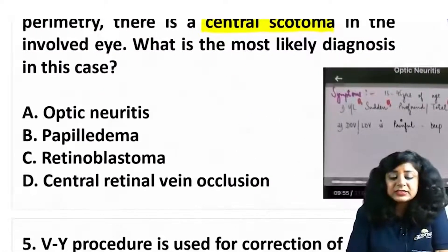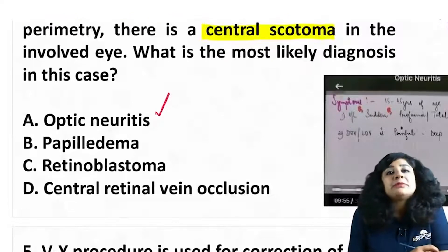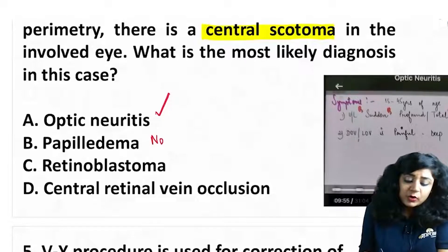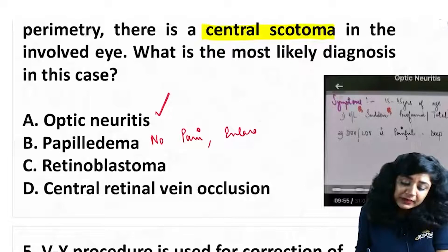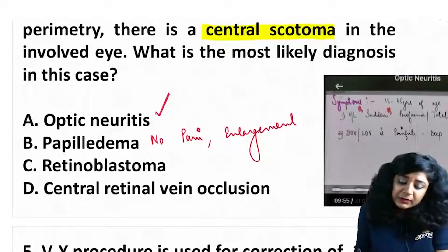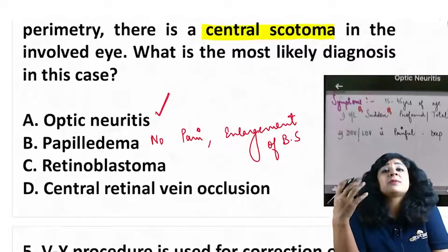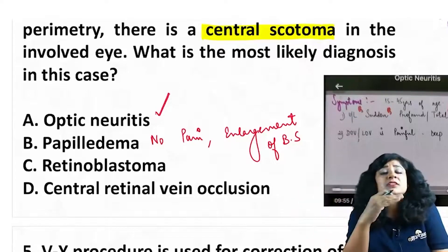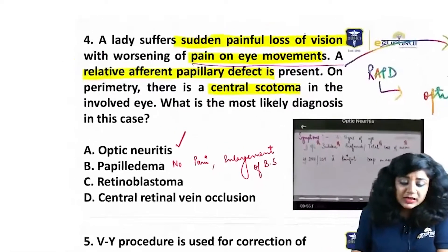So the answer here is optic neuritis, where central scotoma and RAPD can be found. Now in papilledema, you will not have pain on ocular movements. The perimetry finding will show enlargement of the blind spot, obscuration of the nasal margins, obscuration of venous pulsations, and there could be a champagne cork appearance — very different from optic neuritis.